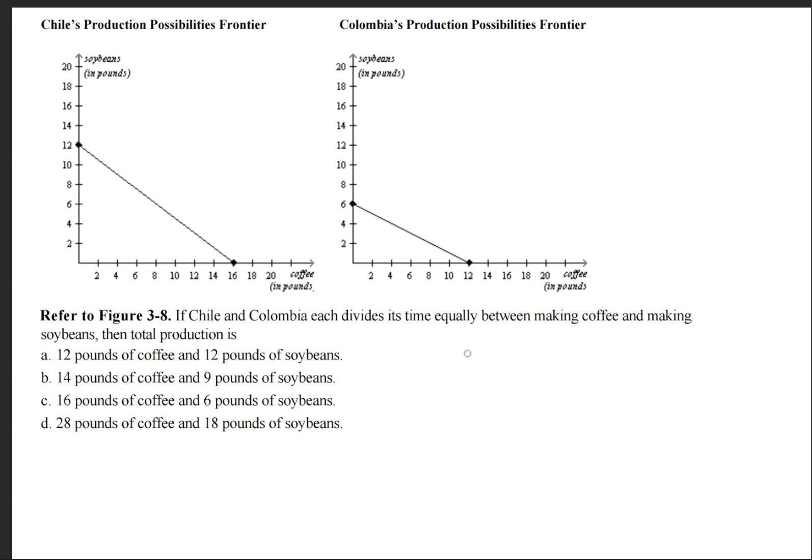If Chile and Colombia each divides its time equally between making coffee and making soybeans, then total production is?